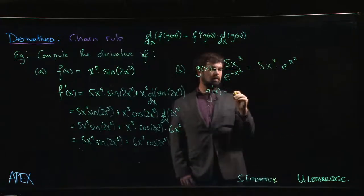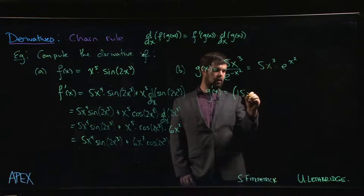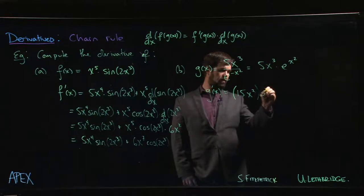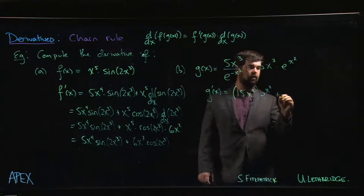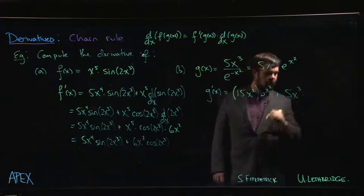So we have to do the derivative of 5x cubed, which is going to give me 15, 5 times 3x squared times e to the x squared, plus 5x cubed times...